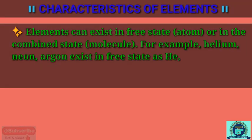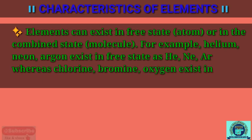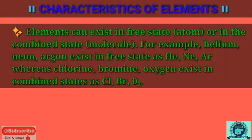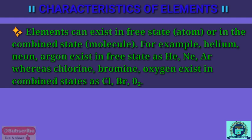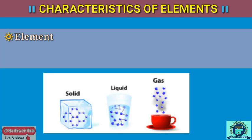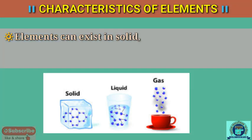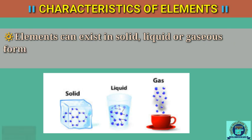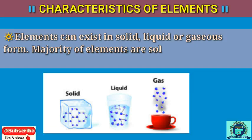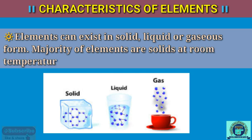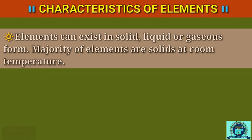For example, helium, neon, and argon exist in free state, whereas chlorine, bromine, and oxygen exist in combined state as Cl₂, Br₂, and O₂. Fifth, elements can exist in solid, liquid, or gaseous form at room temperature, but at low or high temperatures they show different states of matter. The majority of elements are solid at room temperature.